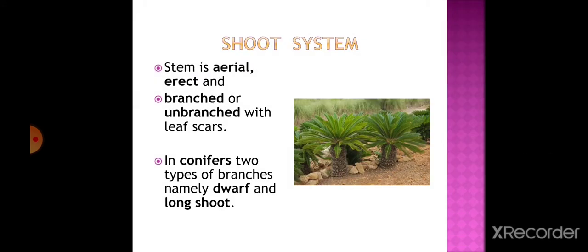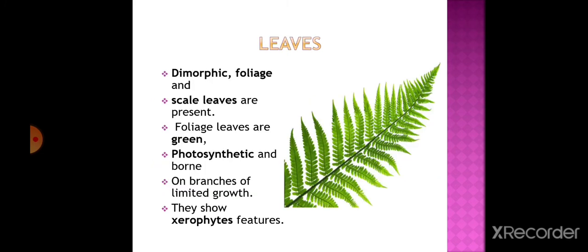Regarding the shoot system, the stem is aerial, erect, and branched or unbranched with leaf scars. For example, Cycas. In conifers we can notice two types of branches: branches of limited growth (dwarf shoot) and branches of unlimited growth (long shoot). Leaves are dimorphic - foliage leaves and scale leaves are present. Foliage leaves are green, photosynthetic, and borne on branches of limited growth.